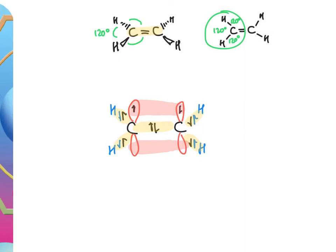We call the single bond a sigma bond. The delocalized second bond — the thing that makes it a double bond — we call a pi bond. That's essentially how the bonding works in the carbon–carbon double bond.